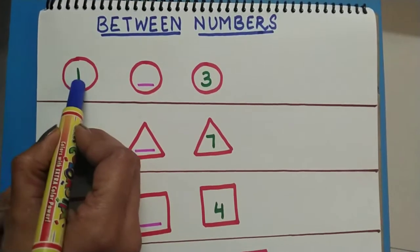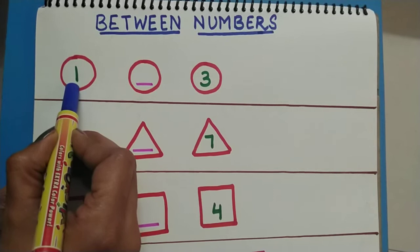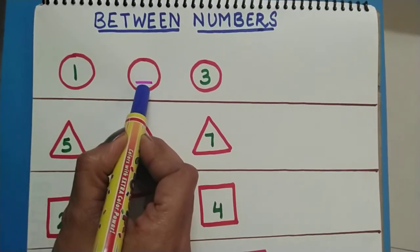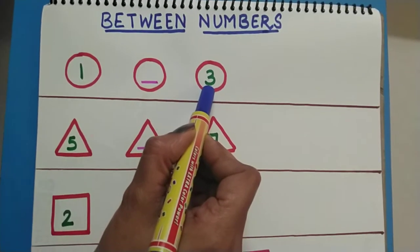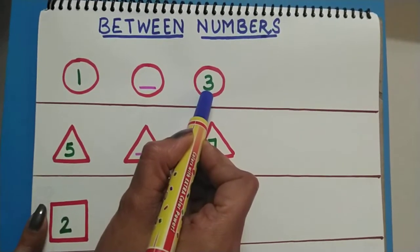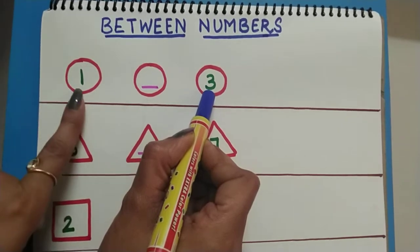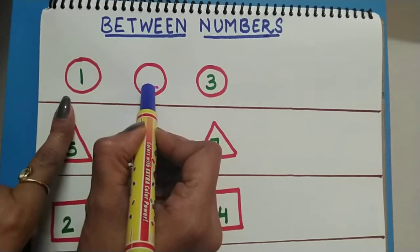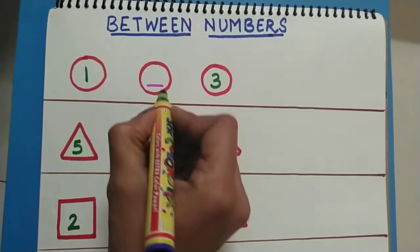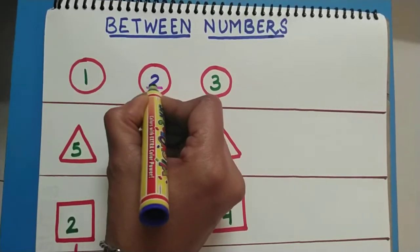And which number is written here? One. And no number is here. And now which number is here? Very good. Three. So we will do counting and we will see what comes in between one and three. One, two and three. So we will write two in between.